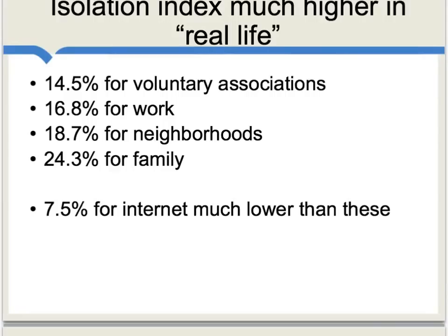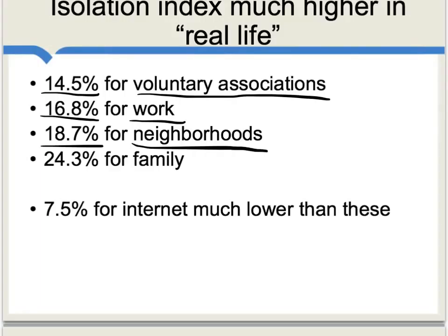One striking result of this paper is that the isolation index is actually higher in so-called real life than for most media. If we calculate that same index for voluntary associations, we find it's 14.5%. For the workplace, it's 16.8%. For neighborhoods, it's higher yet, over 18%. And for family, it's over 24%. The 7.5% for the Internet is much lower than these, showing that the Internet can actually be considered ideologically integrating compared to non-media life. The Internet is getting us considerably more exposure to different points of view.